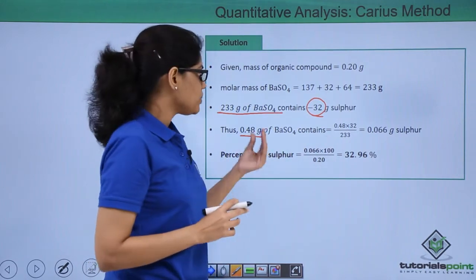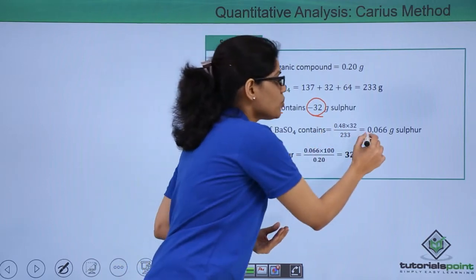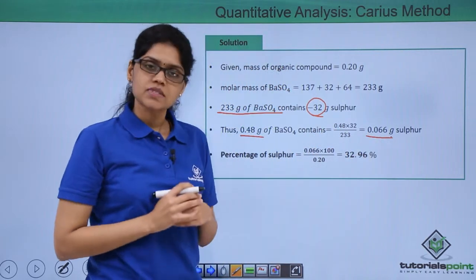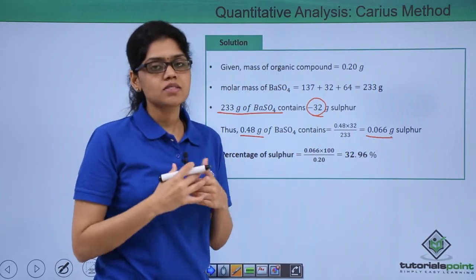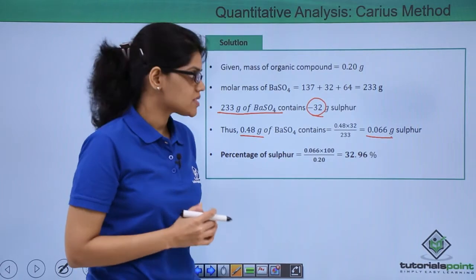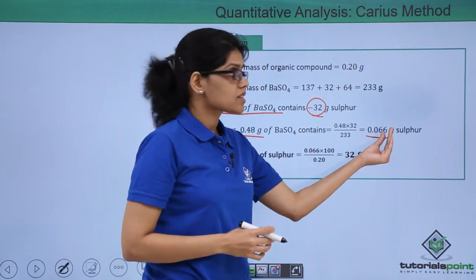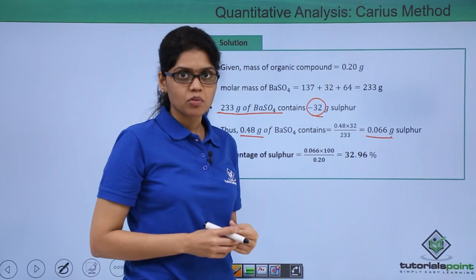So you get a value by simply cross multiplying them and you get at 0.066 g of sulphur. Now the percentage of sulphur in an organic compound would be simply 0.066 g by the total mass of organic compound which is 0.2 into 100 that is 32.96% of sulphur.